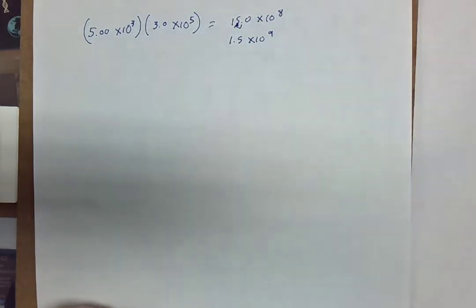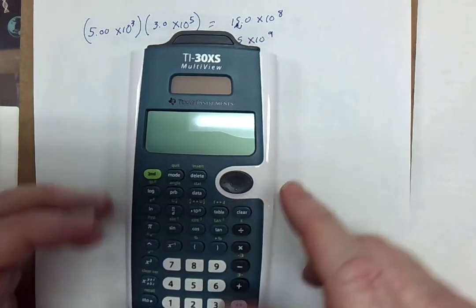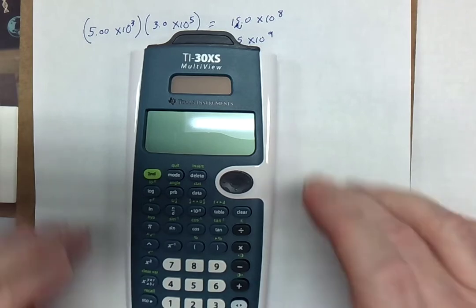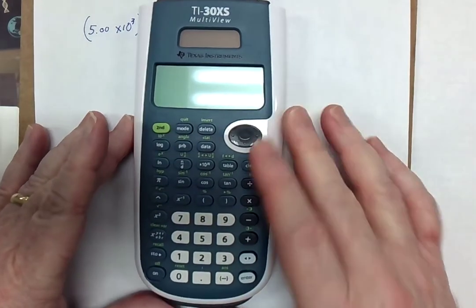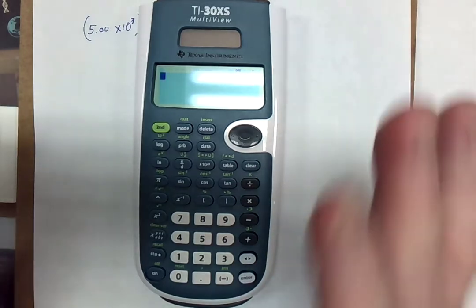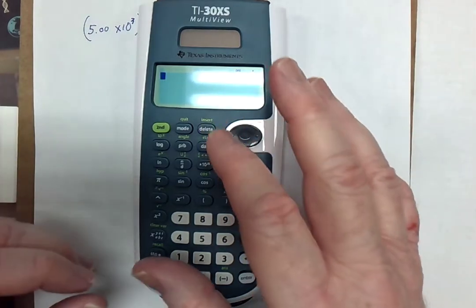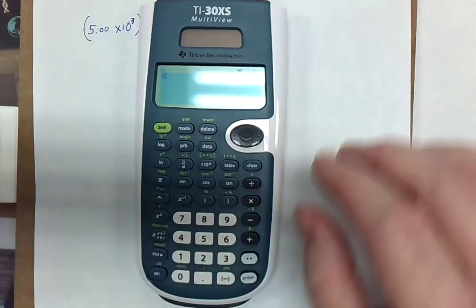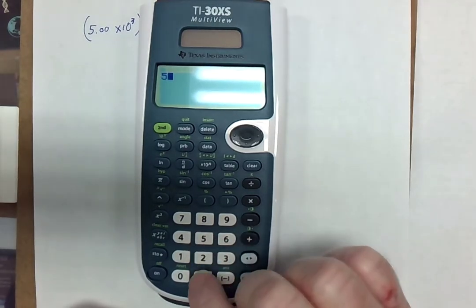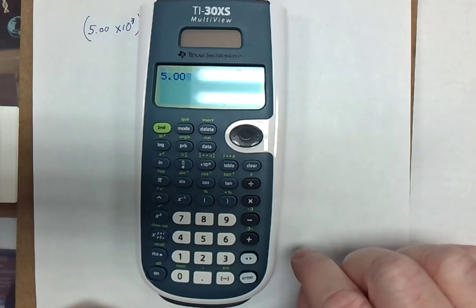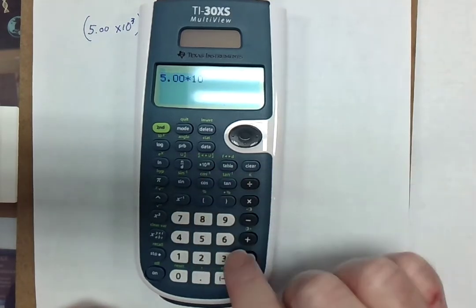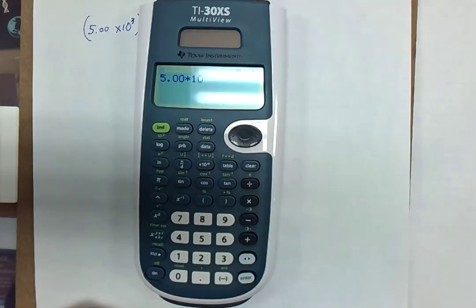Now, this model of TI, which is the 30XS, is one of the most peculiar of TI's calculators for understanding how to put things in. I wanted to put this calculator specifically into the video so you would understand. To do the 5.00 times 10 to the third, we go 5.00, then it has a button times 10 to the N. Then I push that, then I'll push the third.